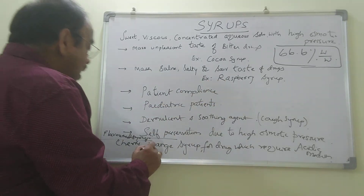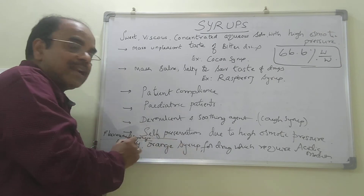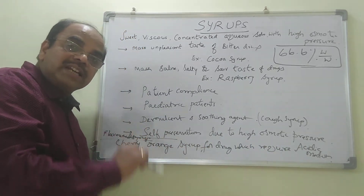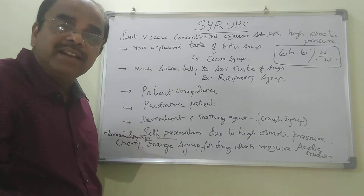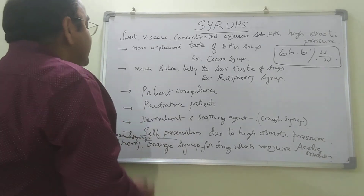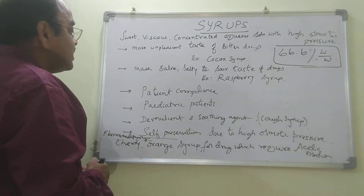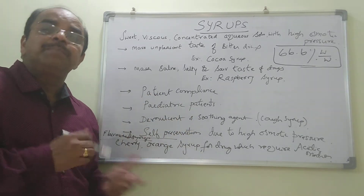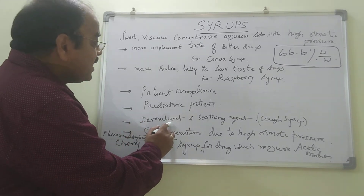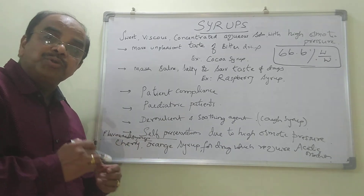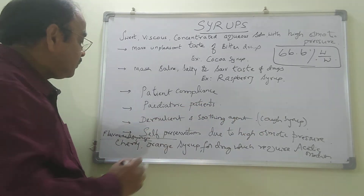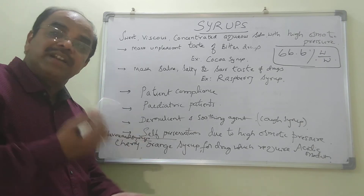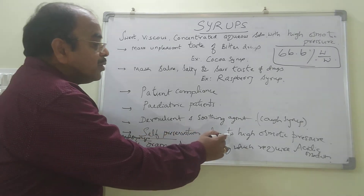We have two more flavored syrups — orange syrup and cherry syrup. These two syrups are preferred when the drugs require an acidic medium. So depending upon the need, we can use different types of flavored syrups. Other uses include patient compliance — sweet preparations are preferred, especially by pediatric patients, children. Syrups also have a demulcent and soothing action, that's why they are used in the preparation of cough syrups. They are self-preservative because of the high strength of sucrose, which provides high osmotic pressure.